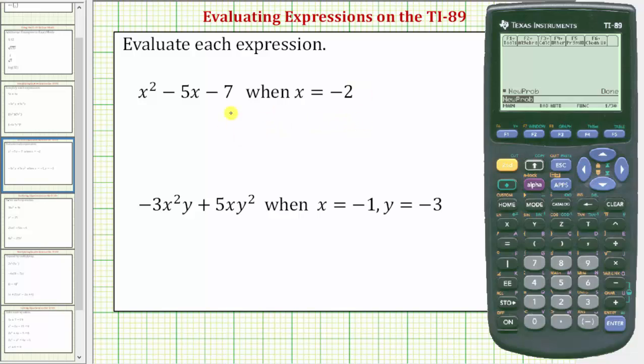Looking at our first expression, we want to evaluate x² - 5x - 7 when x = -2. We begin by entering the expression, which is x raised to the power of two minus five x minus seven.